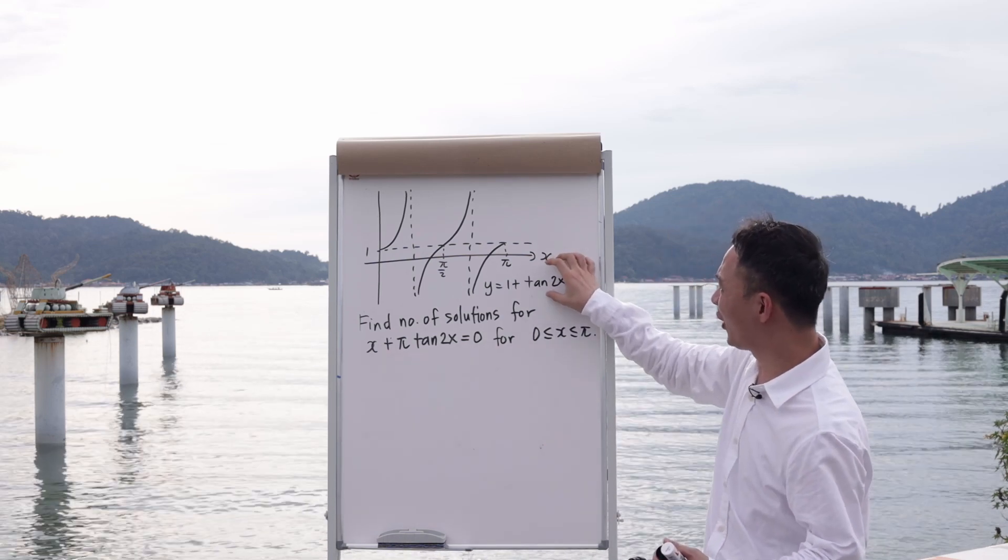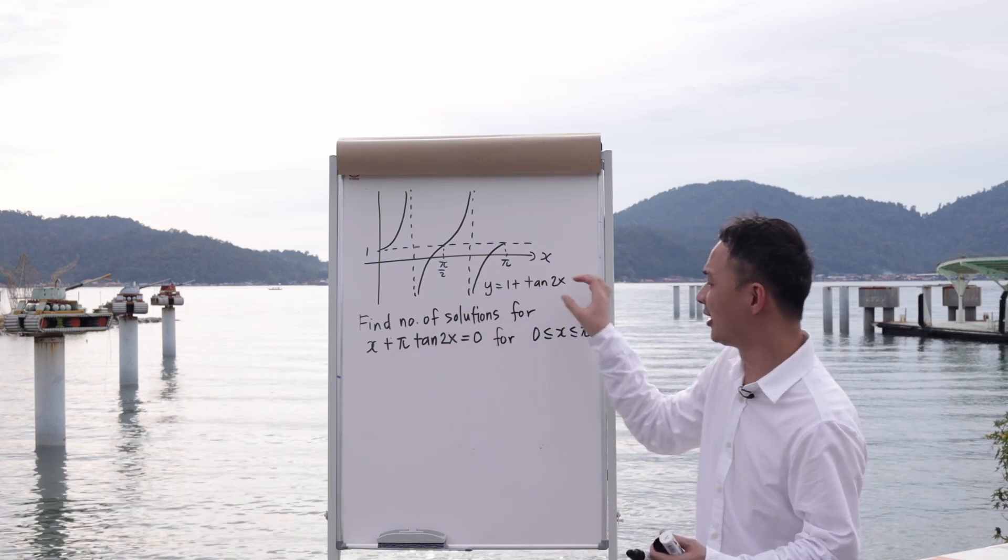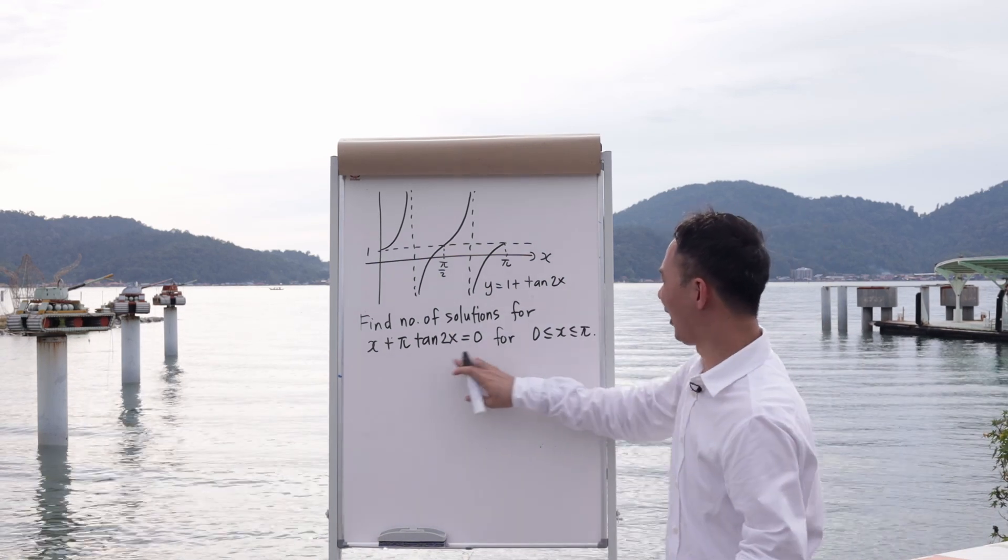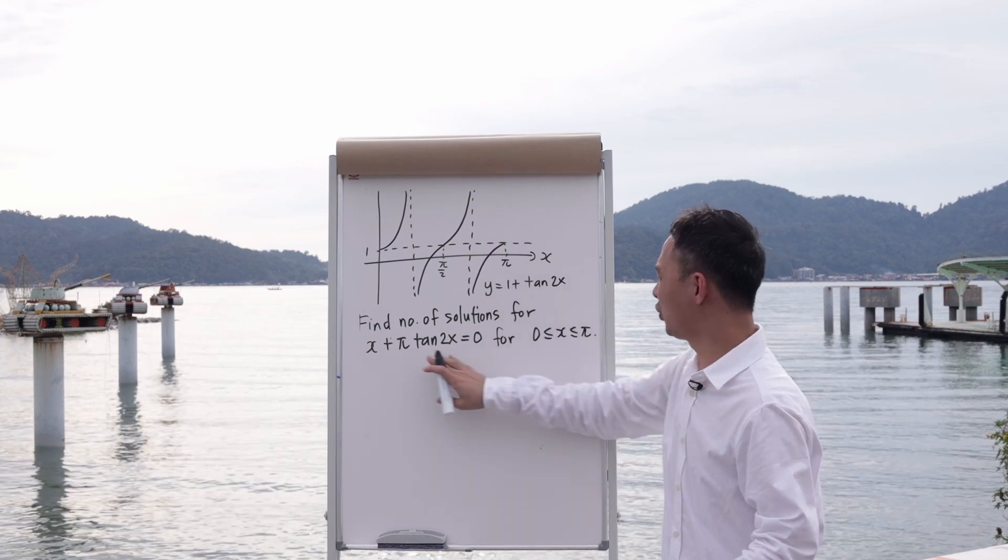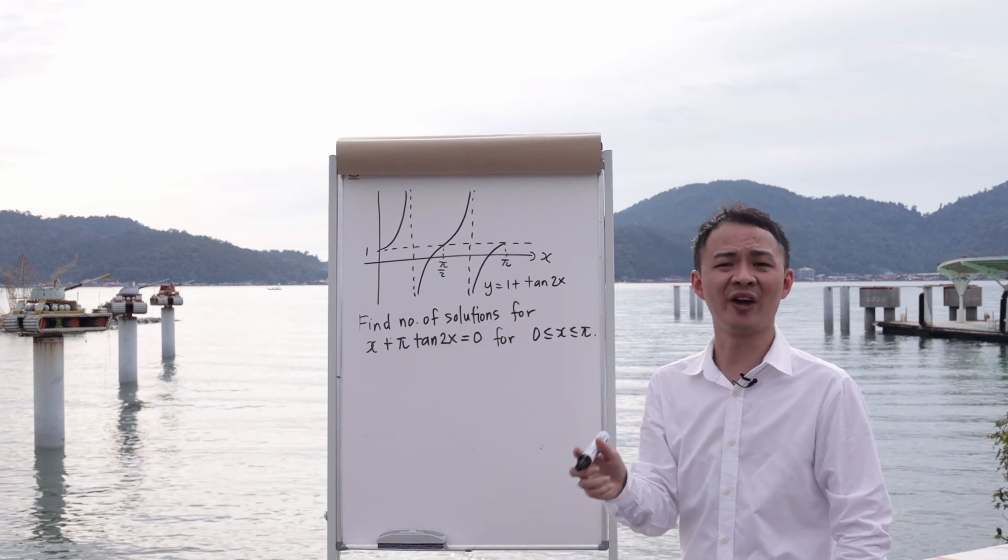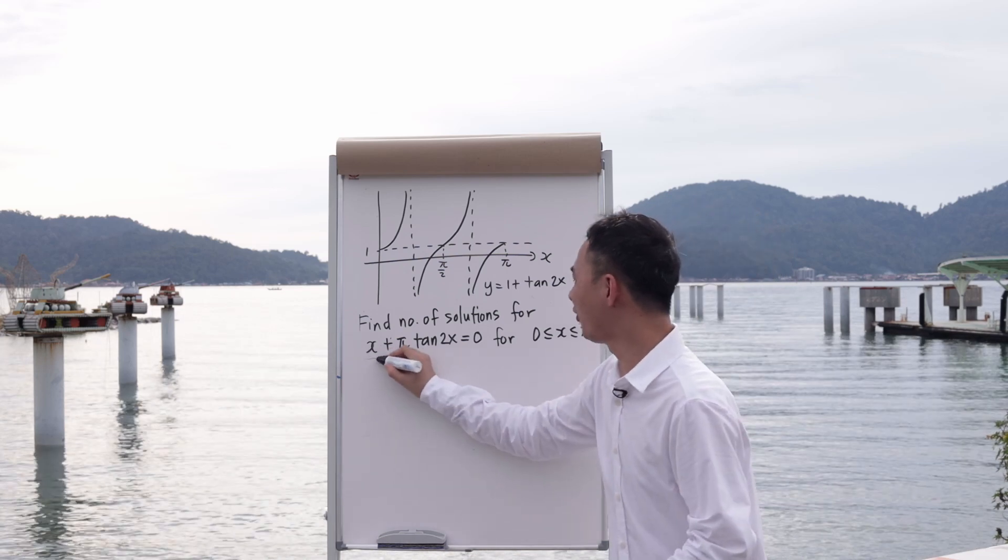So what I want to do is I need to find a way to substitute my y into here. So this is what I will do: I will want to have 1 plus tangent 2x, but this is π plus tangent 2x. So the first thing is I know I do not want to have π, so I will divide π for every single one.